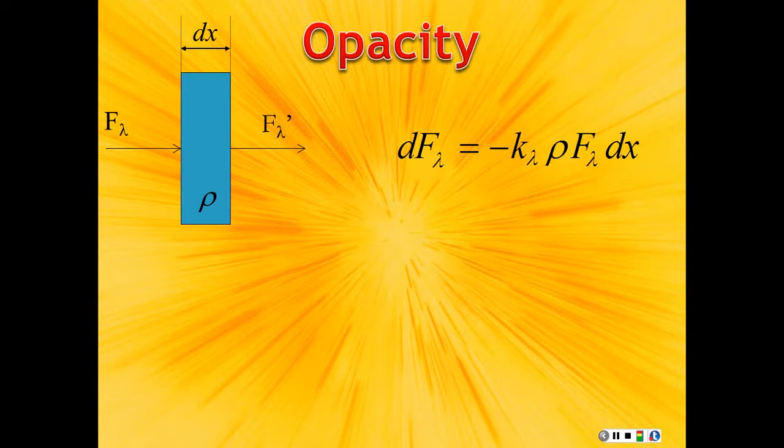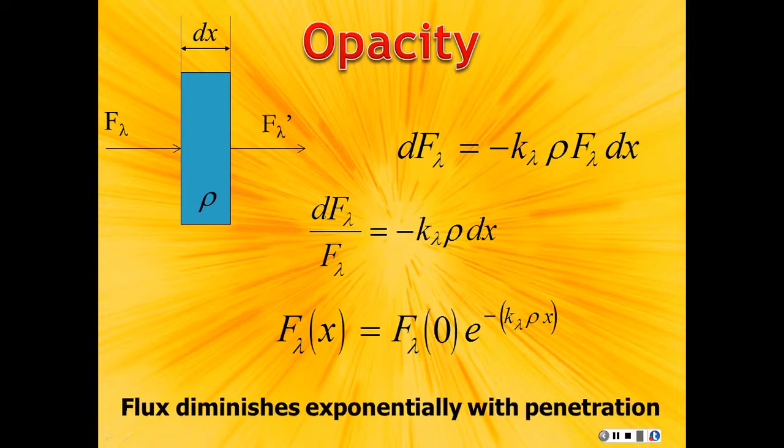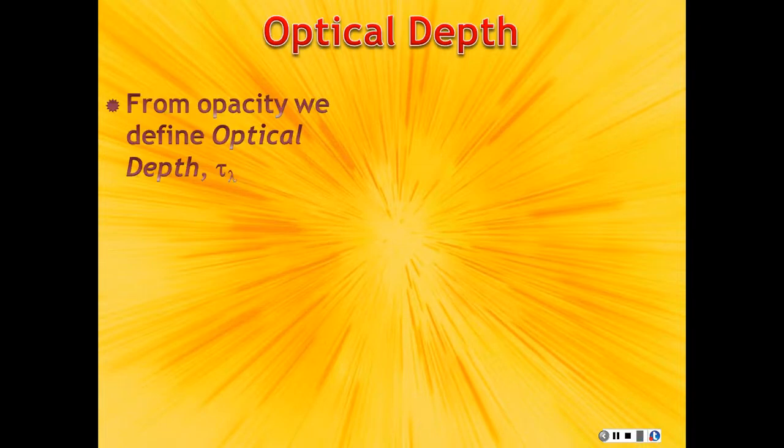So, I have this equation here, and now I've rearranged it so that my F's are on one side. And now I can integrate it, and I get that as a function of the distance into the slab, the flux will be the initial flux, the incident flux, and then it will drop off exponentially depending on the density and the opacity and the distance into the slab. And so, it diminishes pretty rapidly depending on exactly what the opacity is.